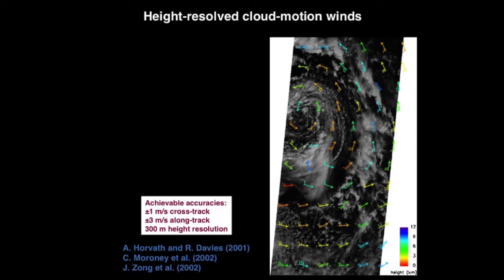Here's an example for a MISR particular orbit. One thing worth mentioning is that it's a very narrow swath instrument — only 360 kilometers wide. This shows a cyclone, an extratropical cyclone, where you get wind vectors every 70 kilometers and the associated height in the same step.